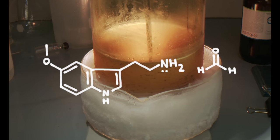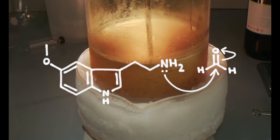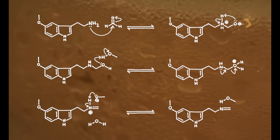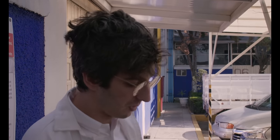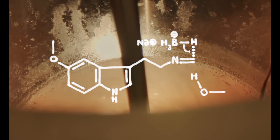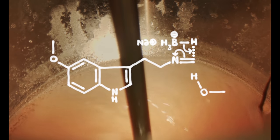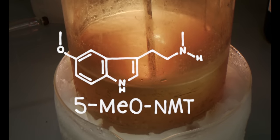Lone pair electrons on the basic nitrogen attack formaldehyde's carbonyl carbon, forming an iminium ion and water. Hydride attacks the electrophilic imine carbon, and electrons flow into the nitrogen, producing 5-MeO-NMT.